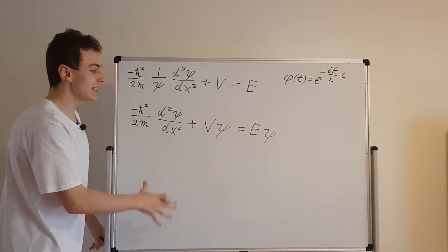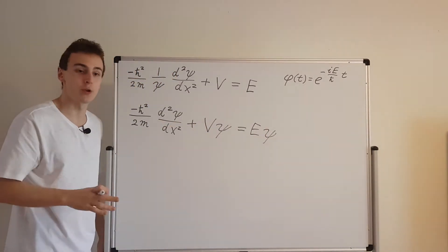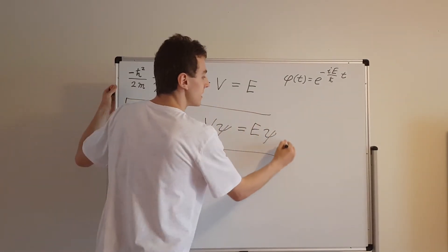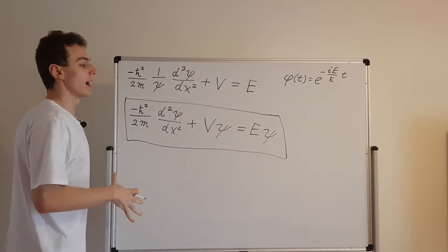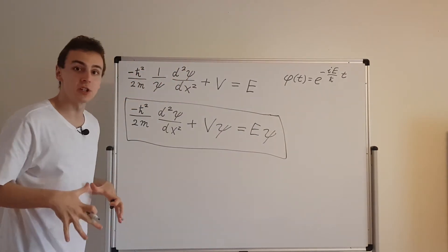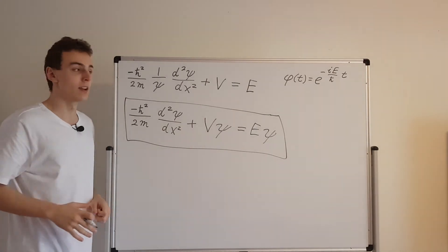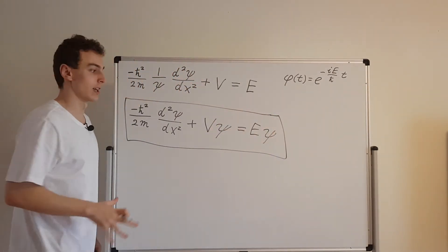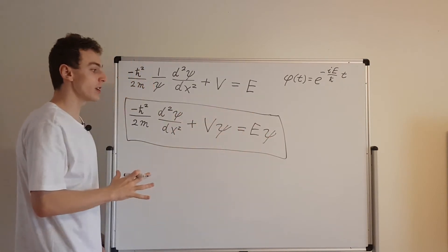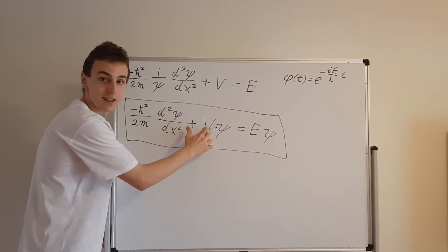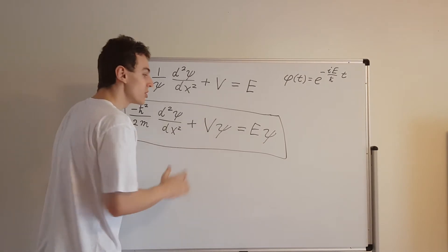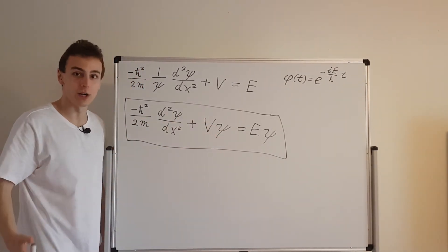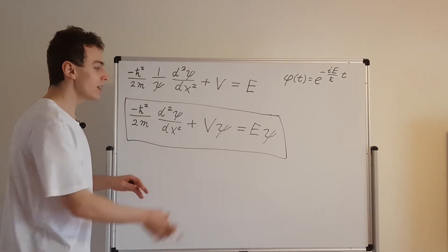This is the time independent Schrödinger equation. I'm going to put it in a box because it's very important. This is actually where most of the work comes from when finding solutions to the Schrödinger equation. Finding this phi is a trivial ordinary differential equation. This is still an ordinary differential equation, but this V could be a whole range of functions, and those functions can be quite complicated to solve when they're in an ordinary differential equation. So depending on what V is, we're going to have different techniques.